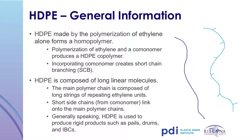Why would a processor choose a homopolymer versus a copolymer resin? The choice depends on the stiffness and impact resistance desired in the final product. Homopolymers are more rigid due to the straight long chain with no side branches, allowing molecules to be stacked very close together for a rigid end product. However, the drawback is lower impact resistance. Conversely, short-chain branching improves impact resistance but reduces stiffness. Generally, high-density polyethylene is used to manufacture rigid products such as pails, drums, and IBCs.